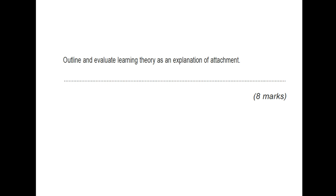Outline and evaluate the learning theory as an explanation of attachment. For four marks, you outline learning theory — how we learn via classical or operant conditioning. You still have to talk about how the child associates the mother with food for classical conditioning, and for operant conditioning how the child associates the mother with its primary reinforcer, which is the milk. Then do at least one elaborated evaluation point. You can talk about how Harlow's monkeys showed it's not just food that babies are looking for, because the monkeys went to the cloth mother and didn't really care too much about the food.